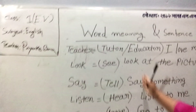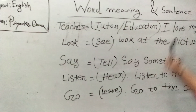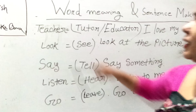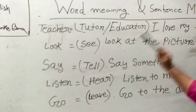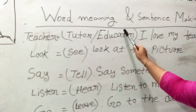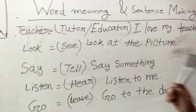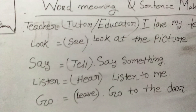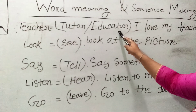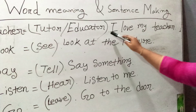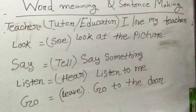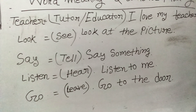There are five words you already learned, but I would like to go over them once again. The first word is 'teacher.' Teacher means tutor or educator. You can write tutor or you can write educator — whichever is easier for you. A sentence example: 'I love my teacher,' or 'She is my teacher,' or 'Miss Priyanka is my English teacher.'